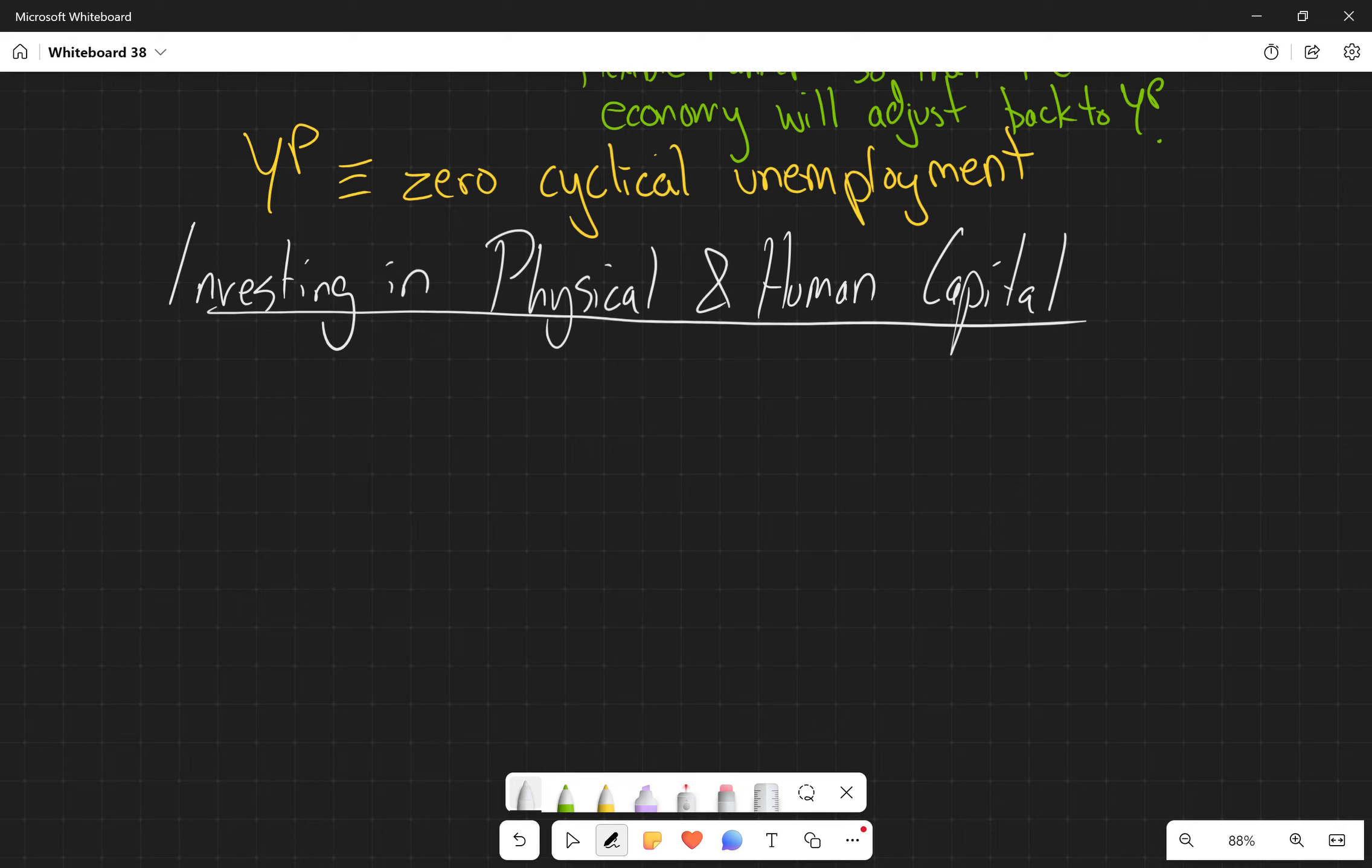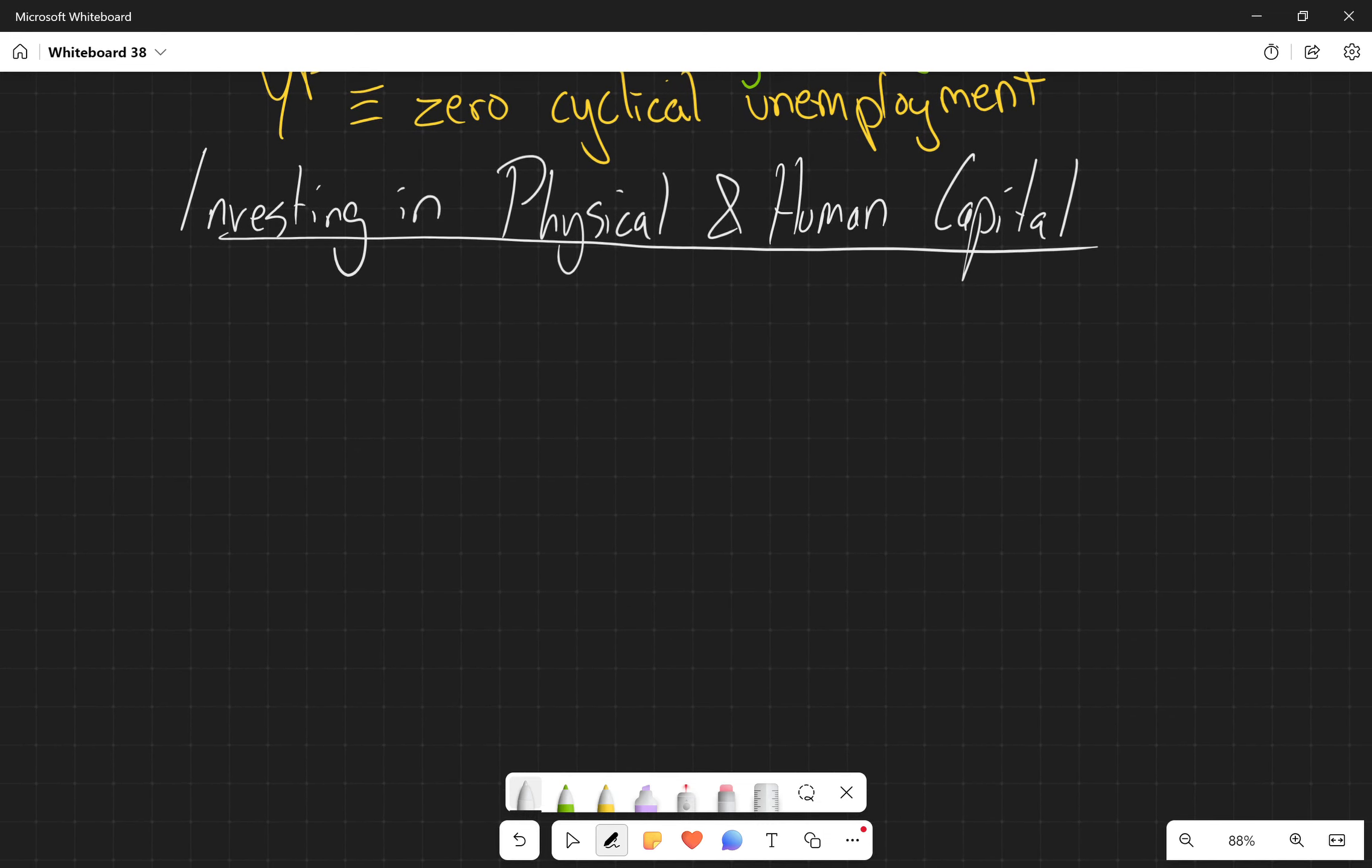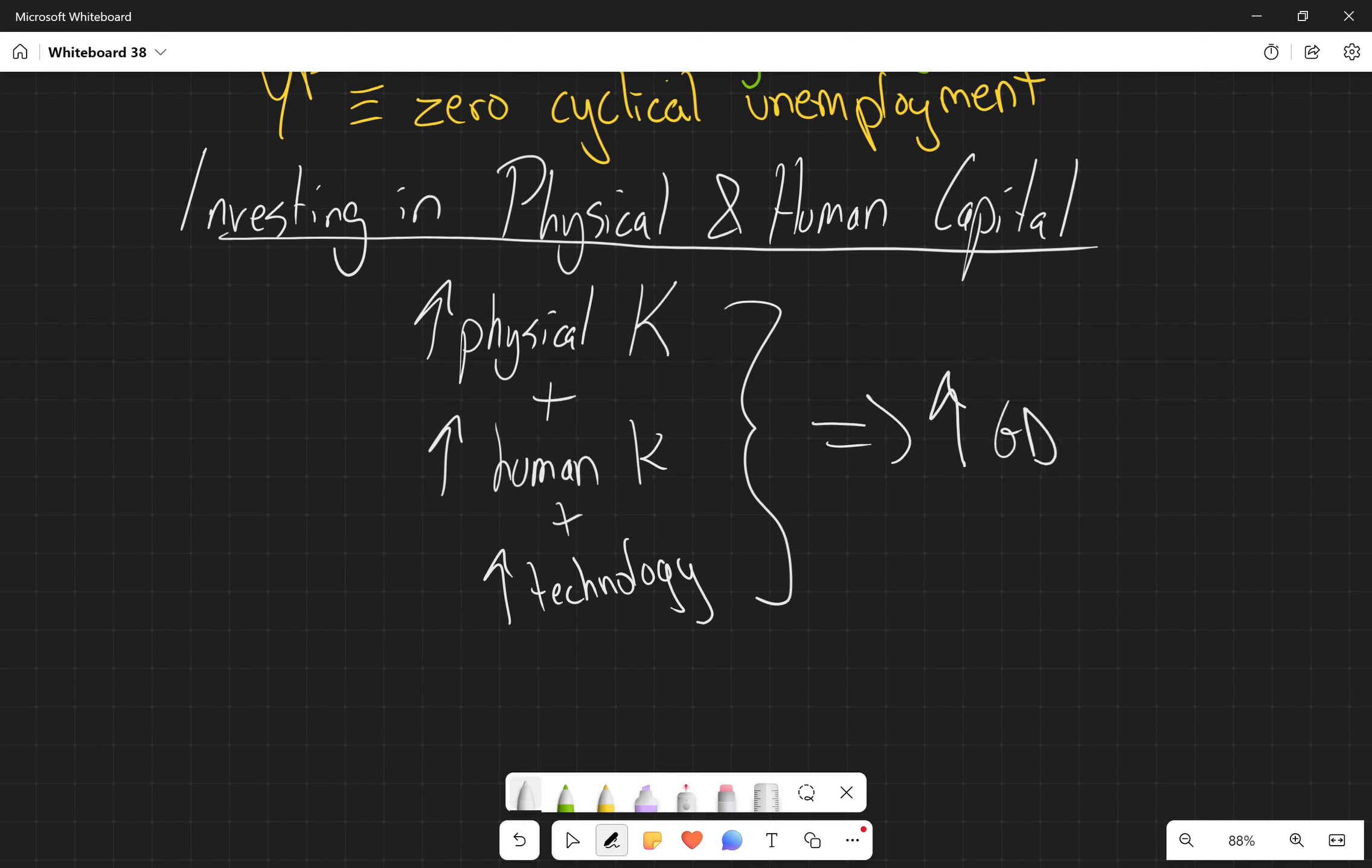So both sides of the macroeconomics aisle, both the supply and demand side, believe that GDP growth is largely explained by increases in physical capital, we use K for capital, plus increases in human capital. And then the last one is also increases in technology. These are the three main factors that cause GDP to rise.